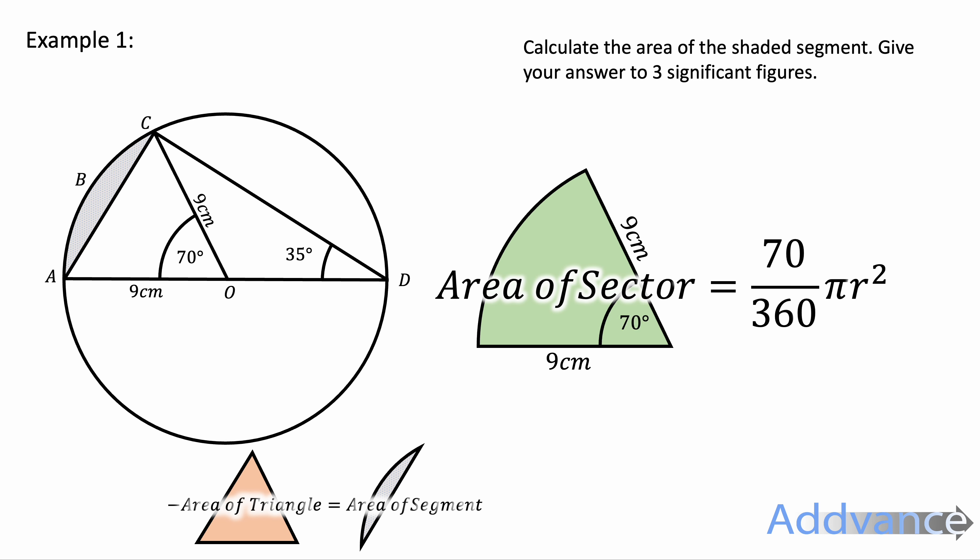70 over 360 times pi times the radius squared. If we type that in, we get 49.48cm squared. That's the equation for area of a sector.